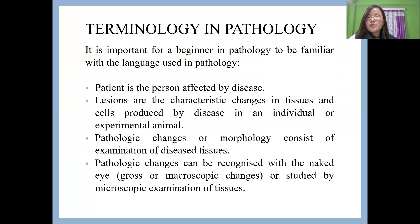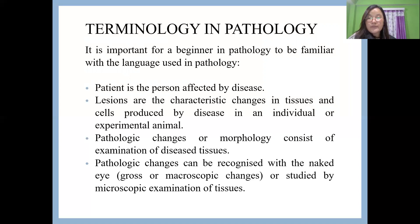Pathological changes are any form of changes visualized by the naked eye or any microscopic changes that occur due to a disease state. To observe these pathological changes, examination is divided into two types: gross examination and microscopic examination. Gross examination uses the naked eye, while microscopic examination uses a microscope to observe minute details of cells or tissue.